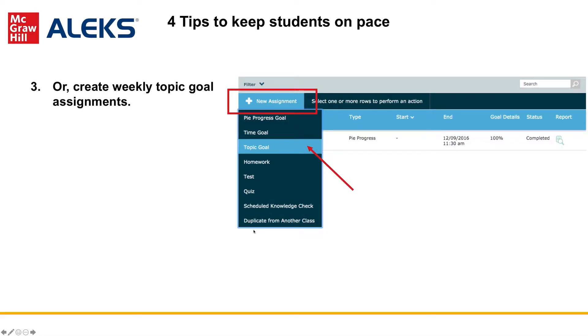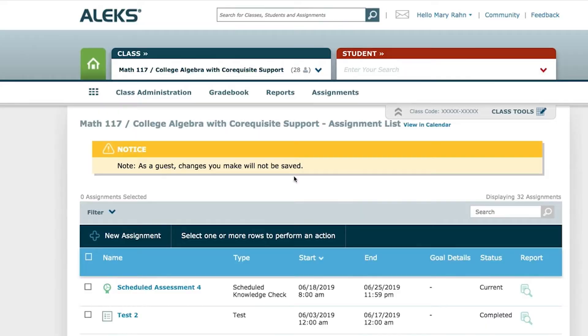Third, depending on your course format, you can create weekly topic goal assignments. A weekly topic goal assignment sets expectations on how many topics a week need to be completed to be successful in the course. These might be useful in a lab setting.